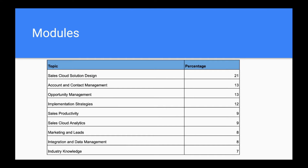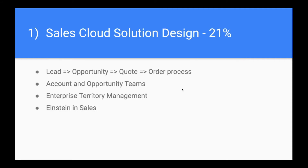These are the high-level modules that you need to study for this exam — there are nine of them. This is directly from the Sales Cloud Study Guide. You can notice that there are some modules that have higher weightage. For example, you need to give more weightage to topics like Sales Cloud Solution Design and Account Contact Management, but not as much weightage to topics like industry knowledge. We will go through all of these modules in detail in subsequent videos, but before wrapping up this video, let's cover the high-level topics in each of these modules.